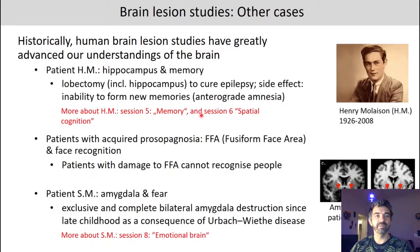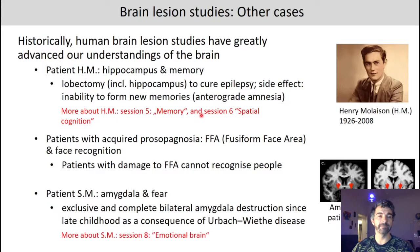Historically, human brain lesion studies have greatly advanced our understanding of the brain. Patient HM was critical in better understanding memory and spatial cognition — you will learn more about that patient in sessions five and six. Another example involves patients with damage to the FFA region of the brain, who experience what is referred to as face blindness, meaning they cannot recognize people anymore. Patient SM had destruction of the amygdala due to Urbach-Wiethe disease and did not experience fear at all — you will learn more about patient SM in session eight.